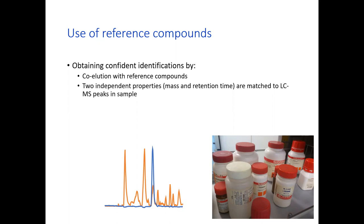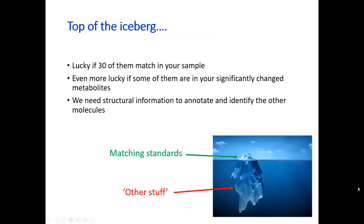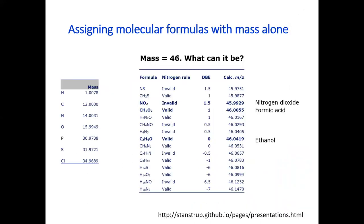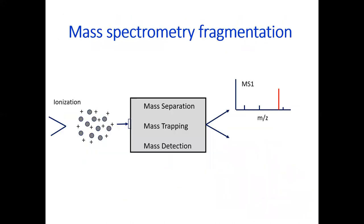In non-targeted analysis without reference compounds, we really measure and identify only a fraction of what we have extracted or measured. I showed a diagram where you might collect hundreds of thousands of chemical signals, but at the end you are able to put a name on only 50 of them, and sometimes that name is assigned based on retention time, mass behavior, or fragmentation patterns — still a putative identification.